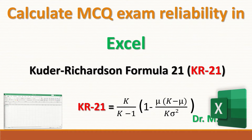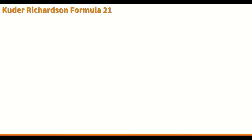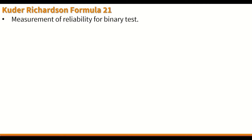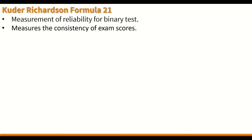Calculating multiple-choice question exam reliability in Excel using Kuder-Richardson Formula 21, abbreviated as KR-21. KR-21 is different from Kuder-Richardson Formula 20; however, the formula calculates the reliability of binary tests. Binary means that it is dichotomous — only two options such as multiple-choice questions where the answer can be either correct or incorrect. Correct is given a value of 1 and an incorrect answer is given a value of 0.